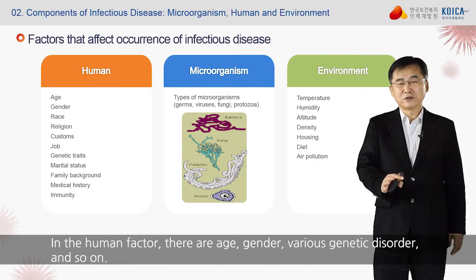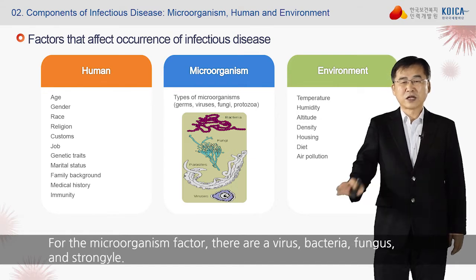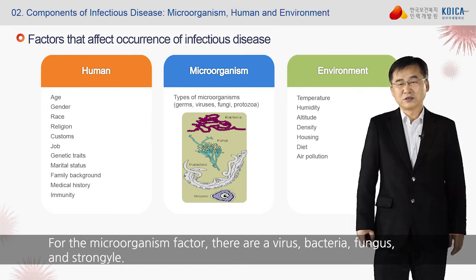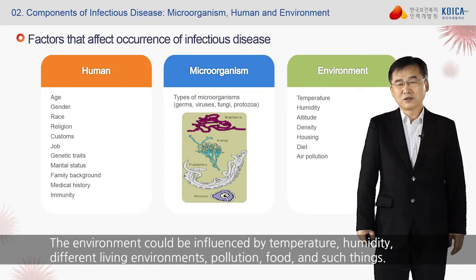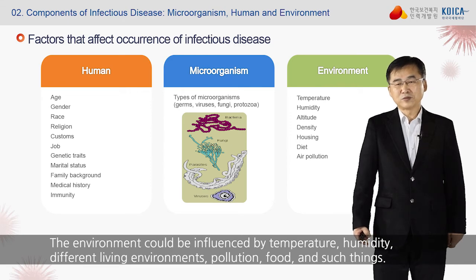In the human factor, there are age, gender, various genetic disorders, and so on. From the microorganism factor, there are viruses, bacteria, fungi, and strongyle. The environment could be influenced by temperature, humidity, different living environments, pollution, food, and such things.